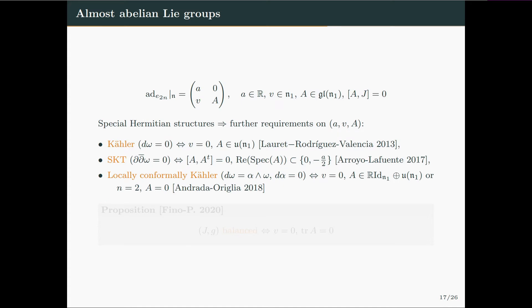So in this context, one can study special Hermitian structures on almost abelian Lie groups by imposing further requirements on the algebraic data a, v, and d. For example, the Kahler condition was studied by Lauret and Rodriguez Valencia. The SKT condition was studied by Arroyo and Lafuente, and I just recall that the SKT condition is another generalization of the Kahler condition, which is characterized by the fact that the fundamental form is d-dbar closed. And then, Andrada and Origlia studied the locally conformally Kahler condition, which can be characterized by saying that d omega is equal to alpha wedge omega, where alpha is a closed one-form.